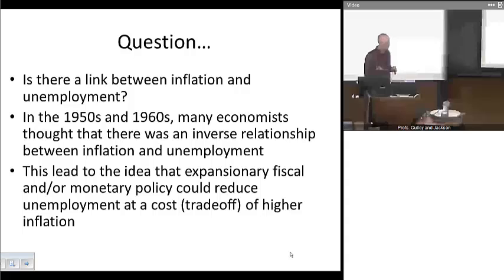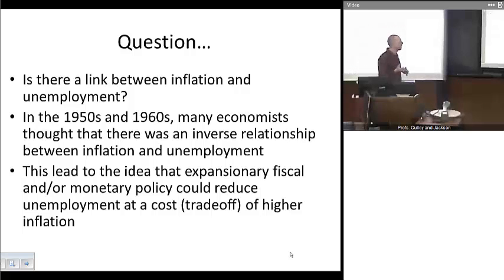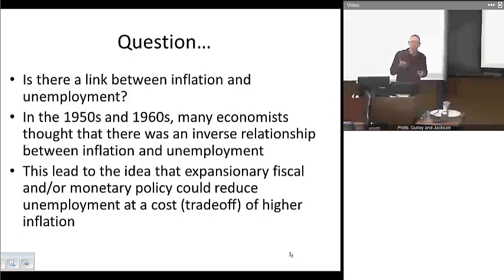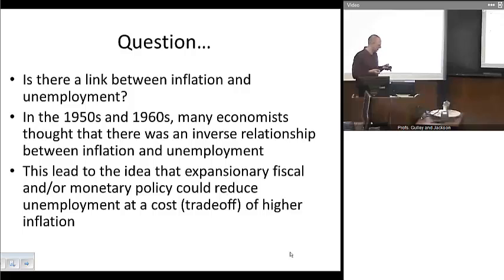For a long time, in the 50s and 60s, a lot of economists thought there was in fact an inverse relationship between the two variables. And as a consequence of that, they thought that there was a possibility for policymakers to, in effect, choose from a menu of inflation and unemployment combinations that they could achieve through appropriate monetary or fiscal policy.